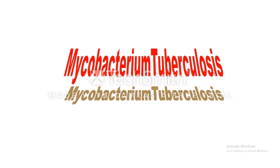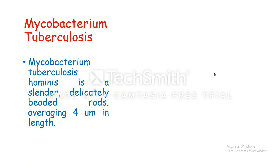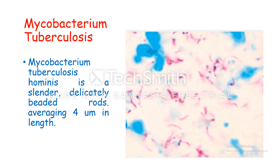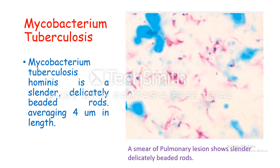Mycobacterium tuberculosis hominis consists of cylinder, delicately beaded rods averaging 4 microns in length. A smear of a pulmonary lesion shows these cylinder delicately beaded rods clearly.